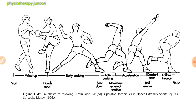We study the patterns of how throwing motion happens. Posterior capsule tightness, which manifests as a loss of internal rotation, is often present in overhead athletes and may lead to anterior-superior humeral head translation, further contributing to irritation of the shoulder joint. Now we study the six stages of biomechanics of throwing motion.